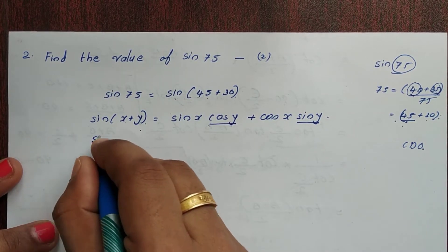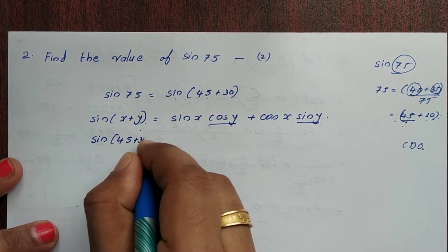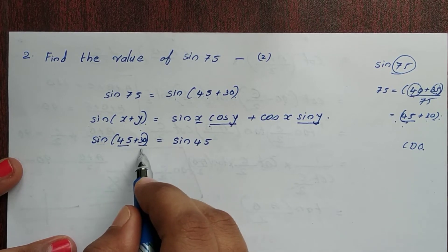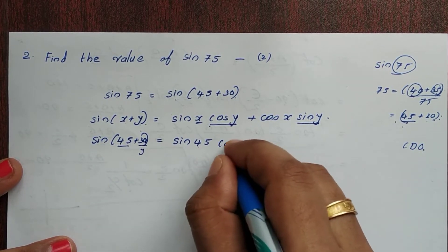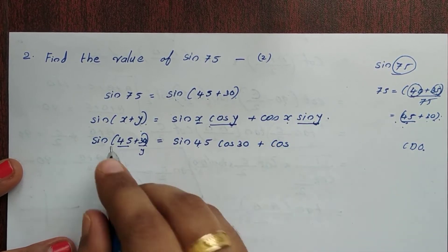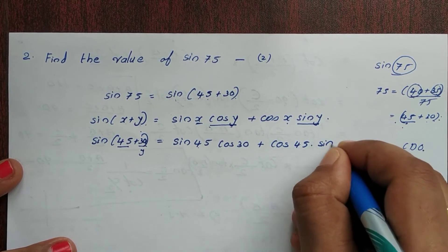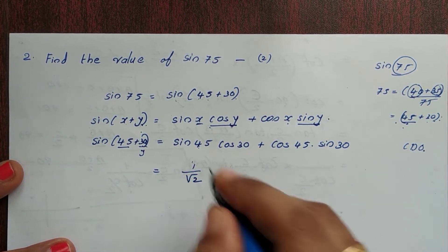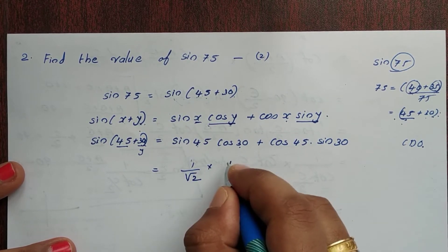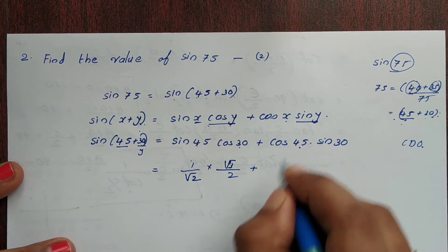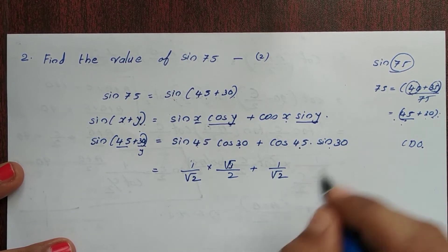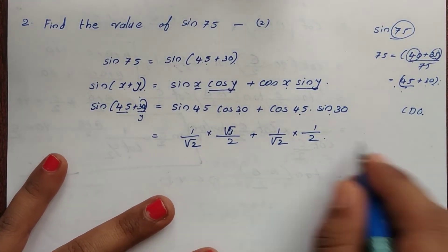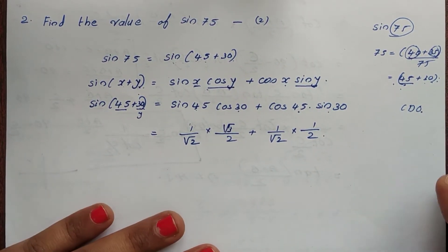So sin(45+30) equals sin45 into cos30 plus cos45 into sin30. Sin45 is 1/√2, cos30 is √3/2, cos45 is 1/√2, and sin30 is 1/2. You need to remember these standard values for the exam.